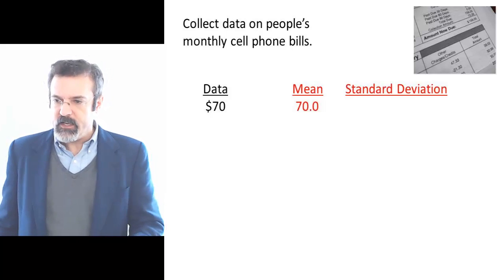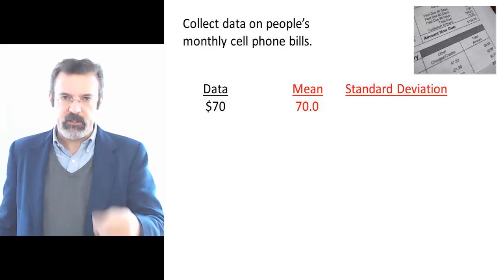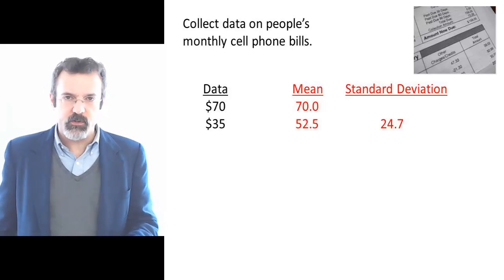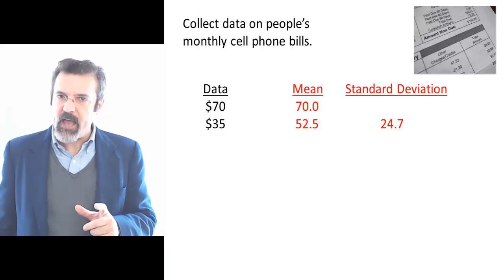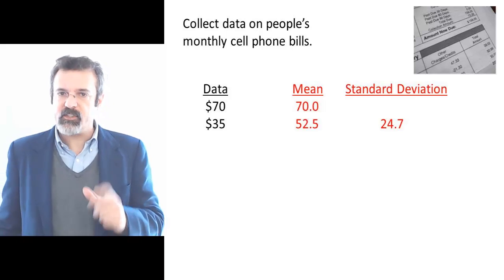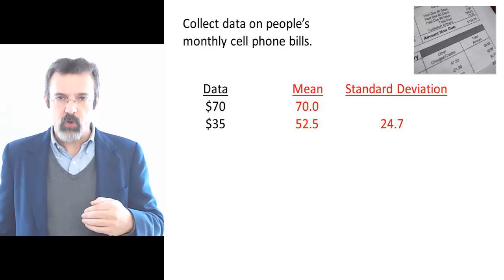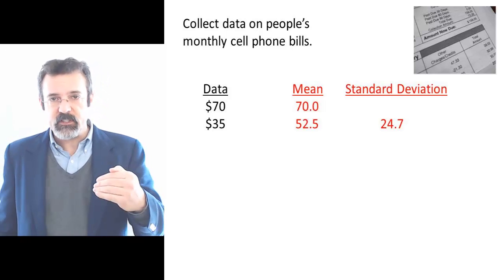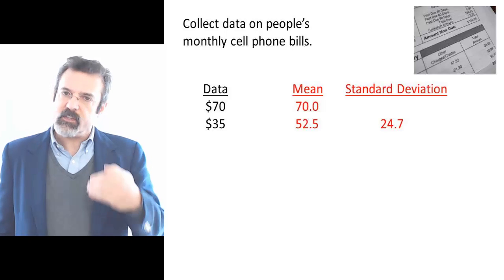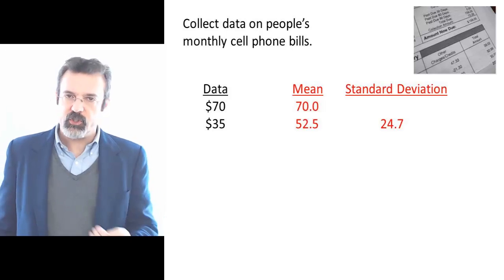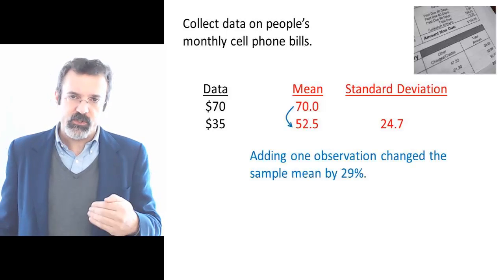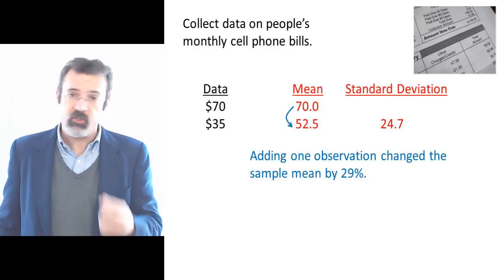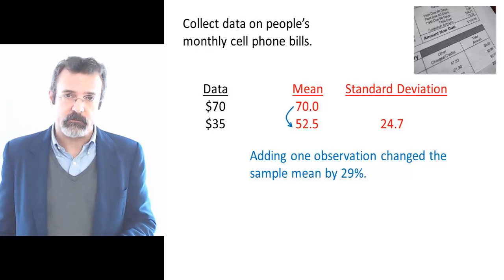We then ask somebody else, and the second person says his bill last month was $35. We now have two observations. Notice what's happened — our sample mean dropped from 70 to 52.5. This is a significant change, and it came about as a result of adding just one observation to the dataset.